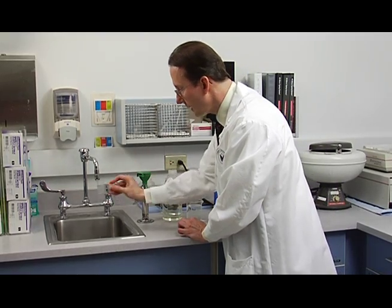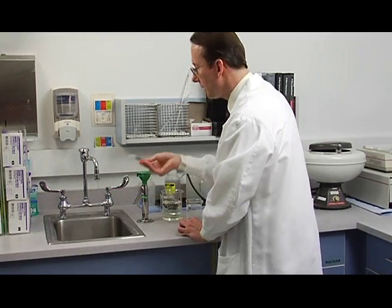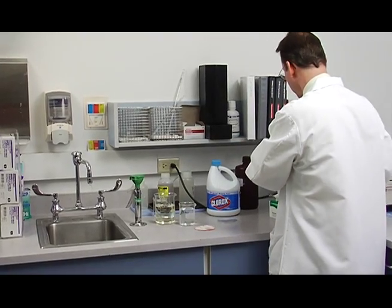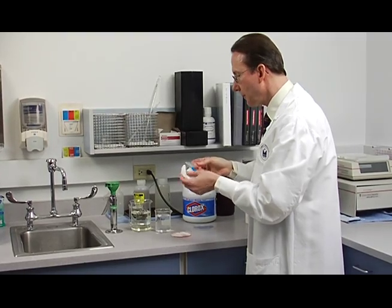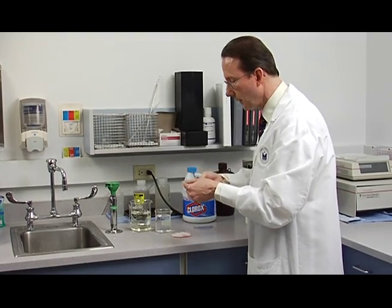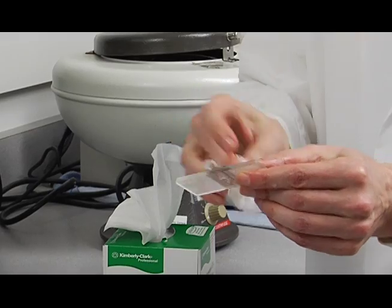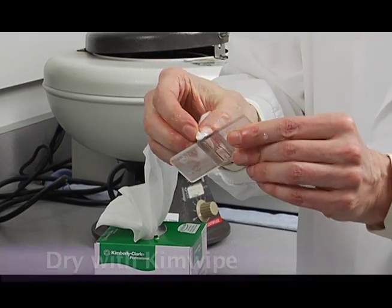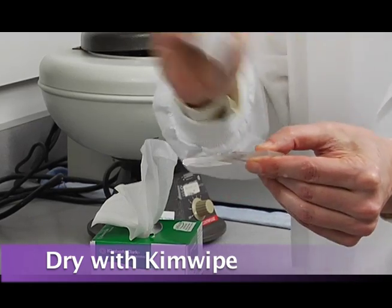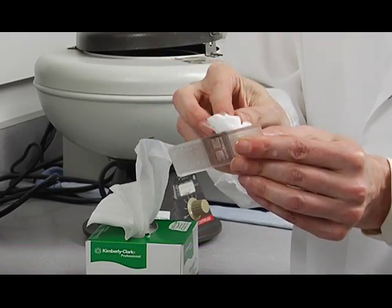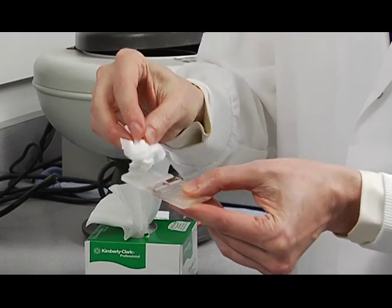Then you shake off the excess water. Make sure you hold it securely so it doesn't drop and break. Then with a lint-free Kimwipe, it needs to be the Kimwipes that do not have kaolin in them so that you don't scratch the hemocytometer. You want to just gently wipe it dry. Don't do this. Just gently wipe it dry.